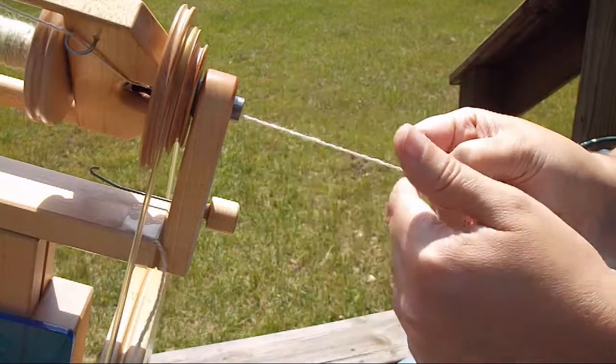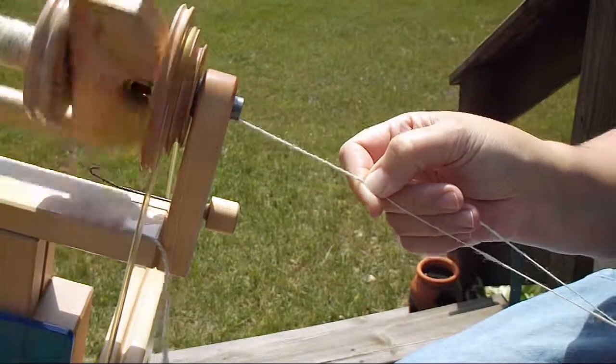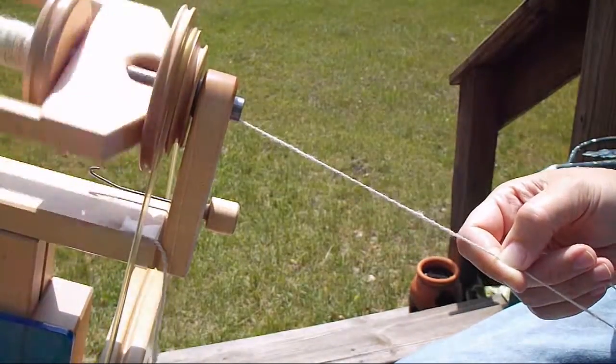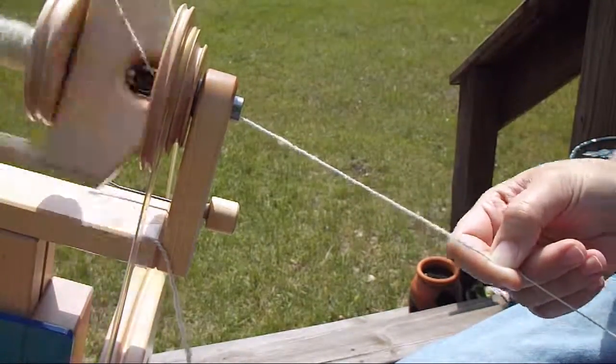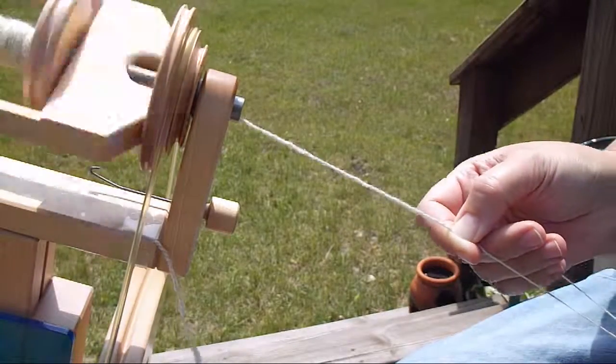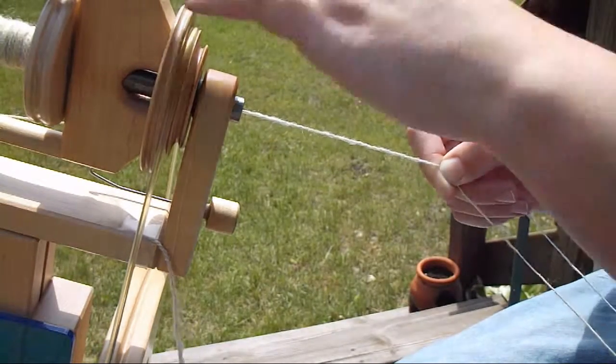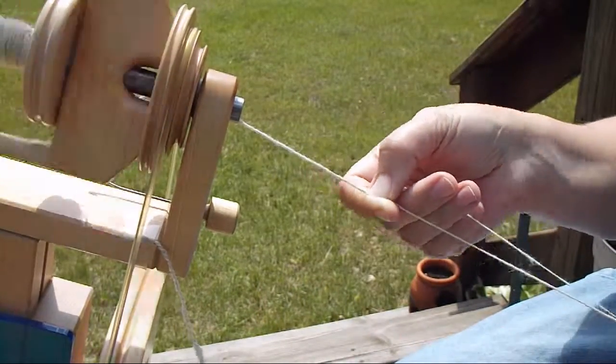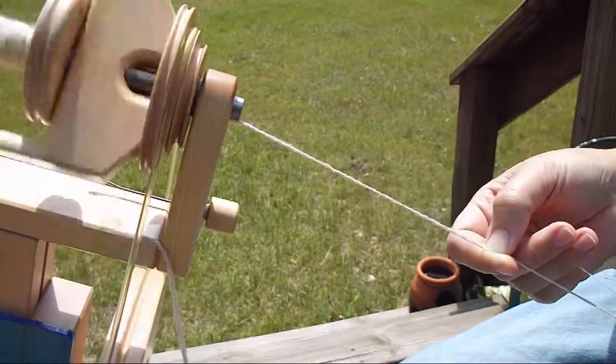The twist coming from the orifice captures those two plies as they're kind of squished into each other and this makes for a very consistent and even plying of the woolen yarn. It really helps meld those two plies together so they almost become like one.